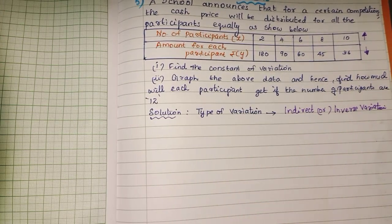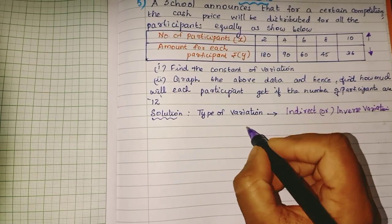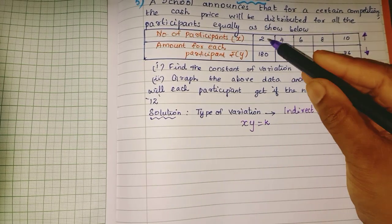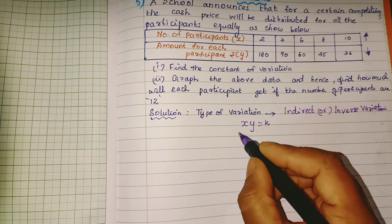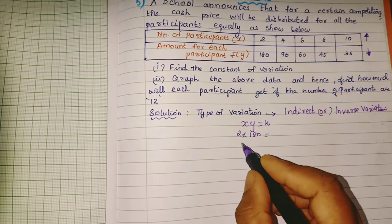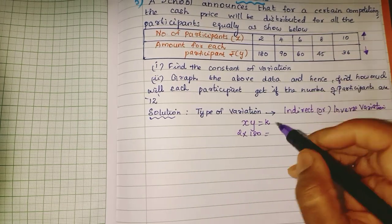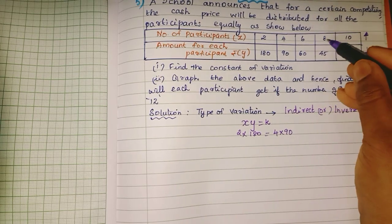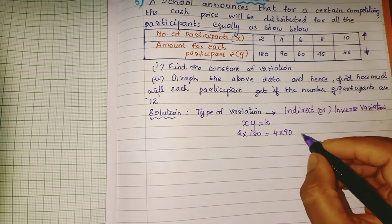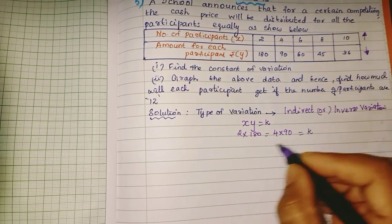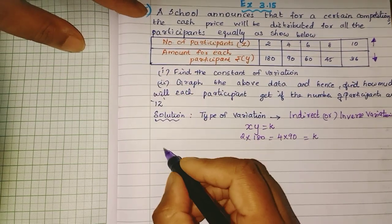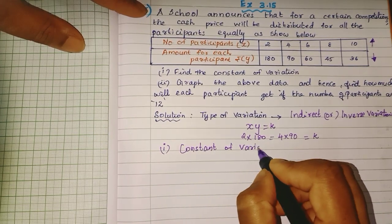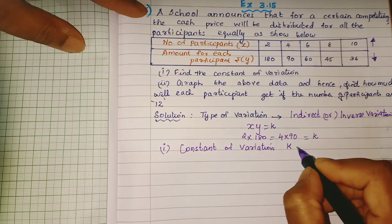For indirect or inverse variation, the equation is x × y = k. If x and y are multiplied, we get k. So: 2 × 180 = 360, 4 × 90 = 360, 6 × 60 = 360, 8 × 45 = 360, 10 × 36 = 360. All values are constant. The constant of variation k is equal to 360.